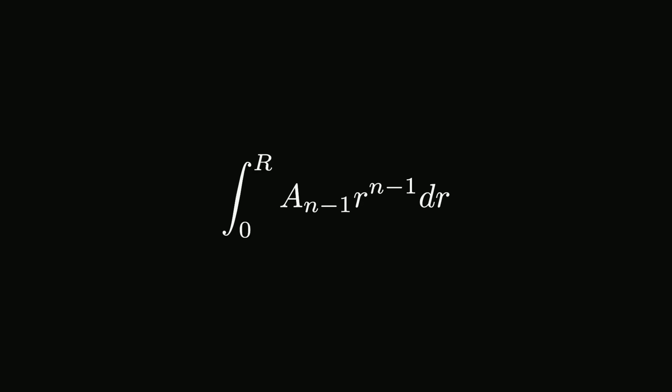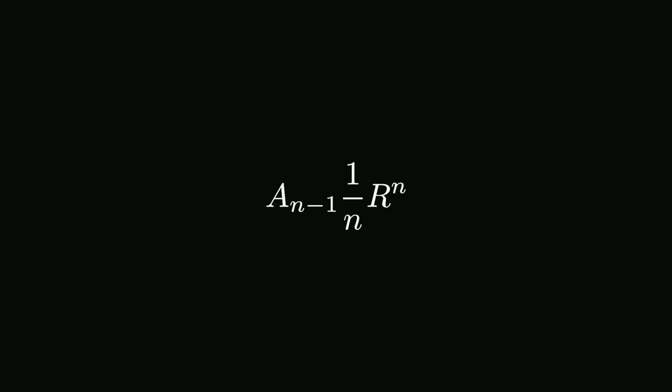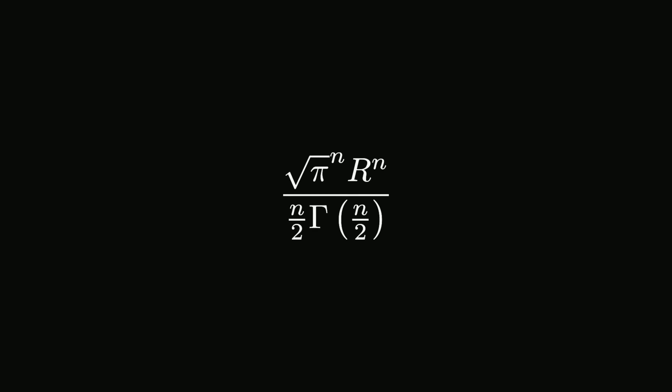With the surface area of an n-sphere, computing the volume is a piece of cake. All we need to do is integrate the surface area with respect to r — the integral of the surface area multiplied by r to the power n minus 1 dr. Since the surface area is dependent on n and independent of r, we can move it outside the integral. The remaining integral is r to the power of n divided by n. Multiplying by the surface area, we find the general formula for the volume of an n-sphere with radius r: the square root of pi to the n, multiplied by r to the n, divided by n over 2 times the gamma function at input n over 2.